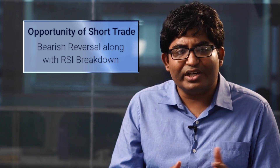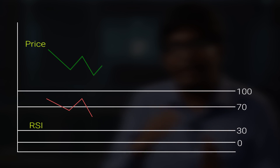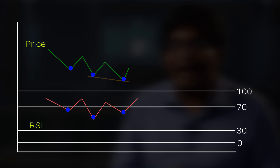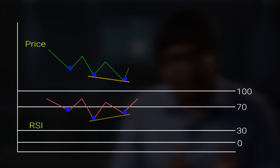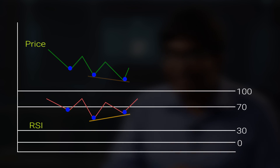Now, what is a bullish divergence? In a bullish reversal with the help of divergence, the price is moving down in a downtrend, but the RSI is not making lower lows towards the end of the trend. The price is deeply falling but the RSI is making a higher low.